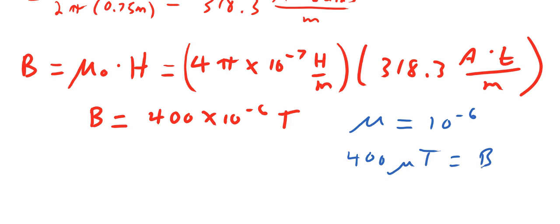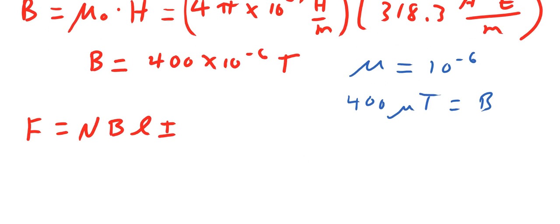Now the force, then the mechanical force F, will be given as N times B times L times I. And here remember that we have agreed that the number of conductors is simply 1. As well the length, this time we are thinking about the force per meter.